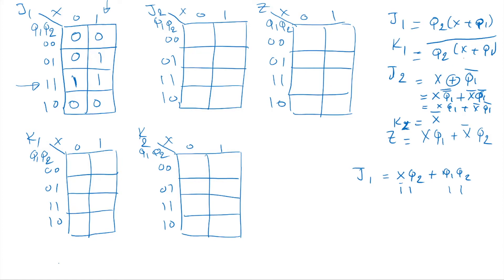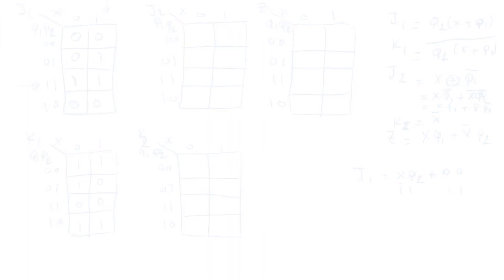Since K1 is the inverse of J1, we simply flip all values: wherever J1 has a zero we put a one, and wherever J1 has a one we put a zero. That gives us the K-map for K1 as the inverse of J1.